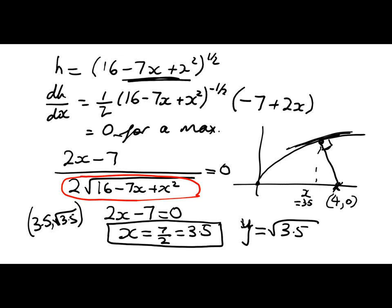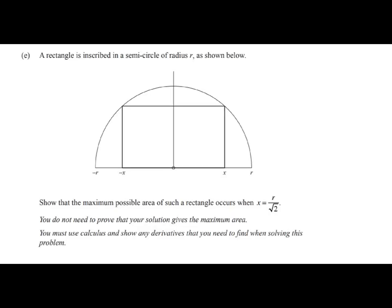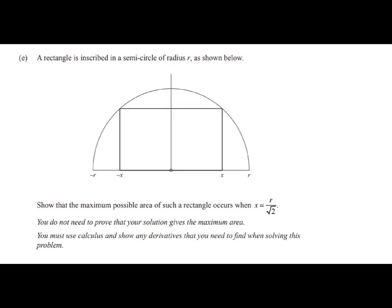Okay, so now we're going to move on to the excellence question. So what we've got here is a rectangle inscribed in a semicircle of radius r, shown below. And what we have to do is to show that the maximum possible area of that rectangle occurs when x is equal to r on root 2. And again, we don't need to prove that we've found a maximum.